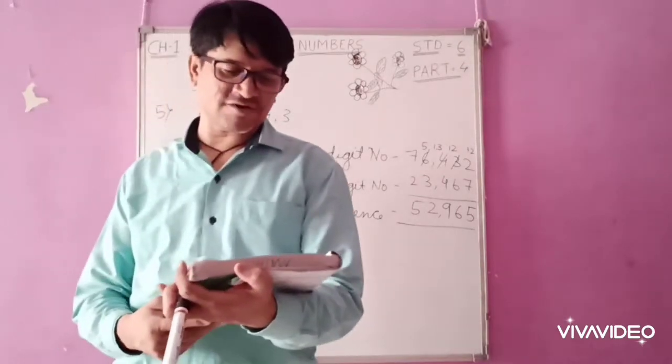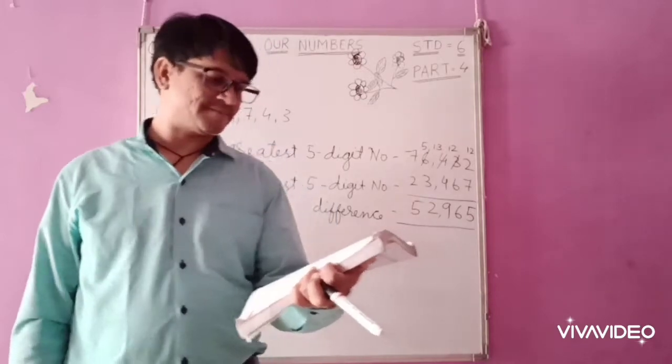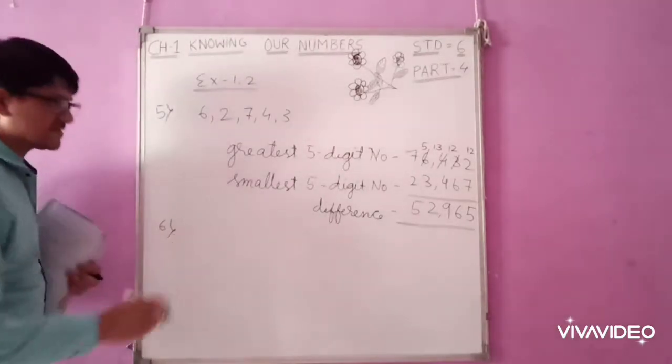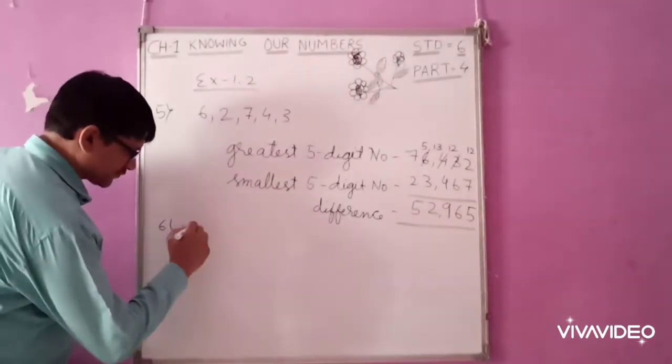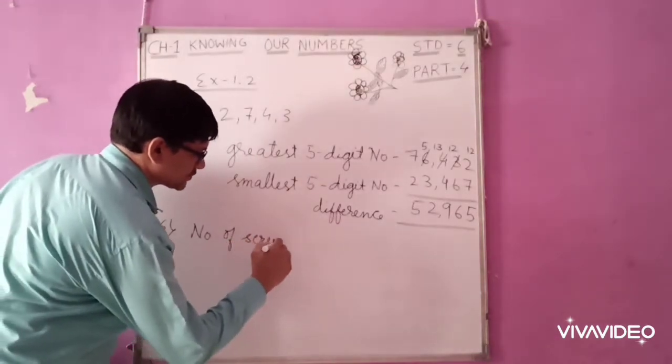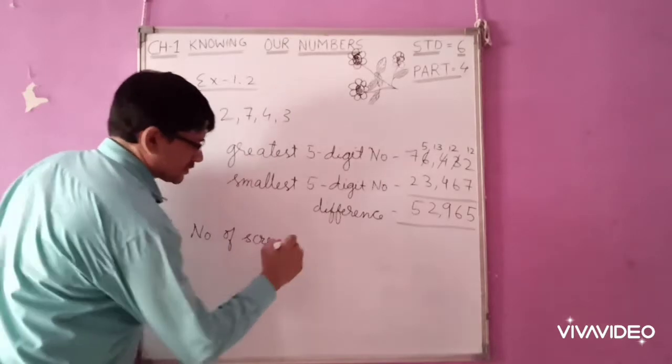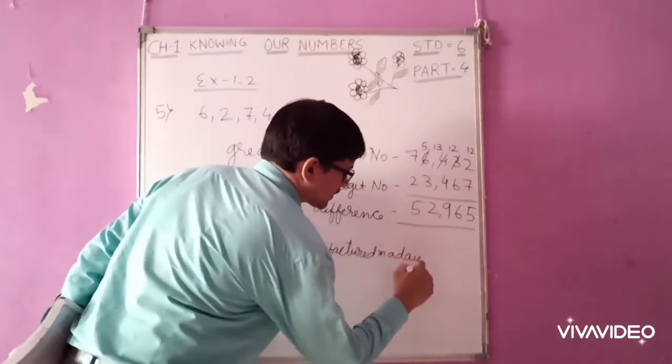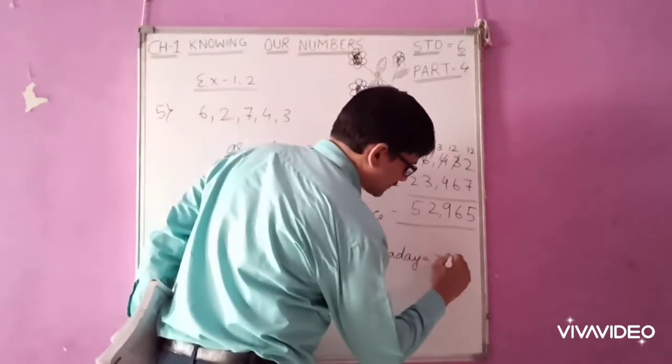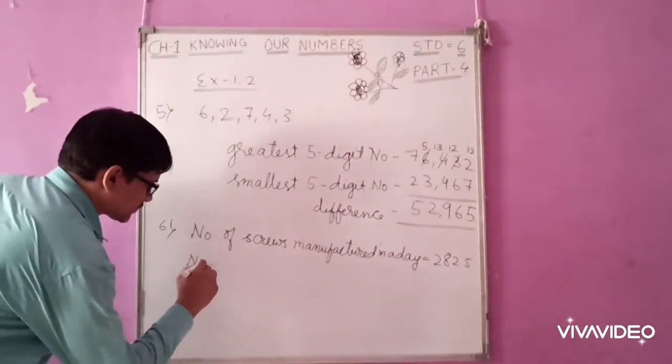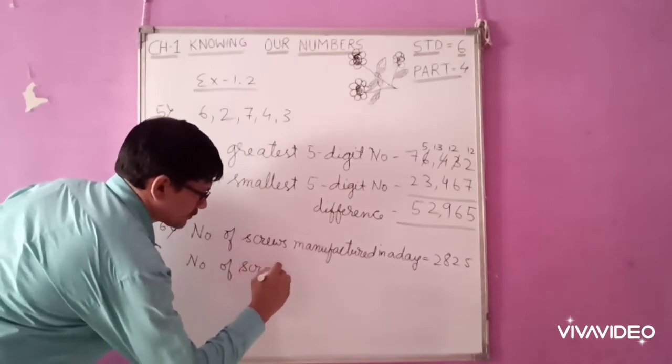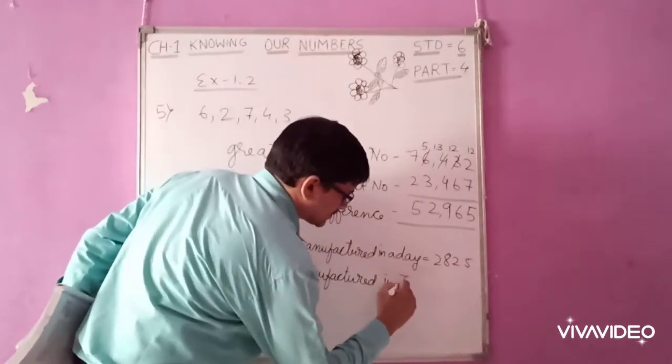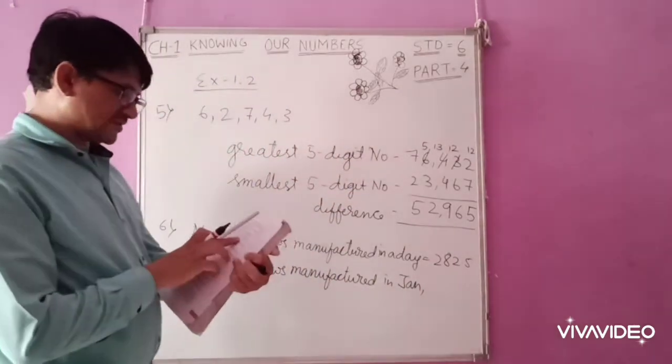Next question is, a machine on an average manufactures 2,825 screws a day. How many screws did it produce in the month of January 2006? Question number 6. Number of screws manufactured in a day is 2,825.